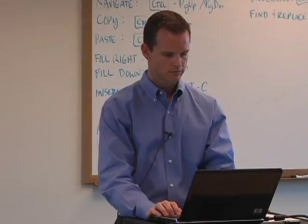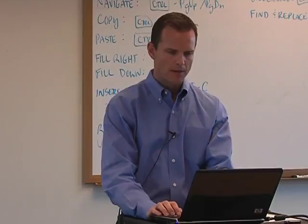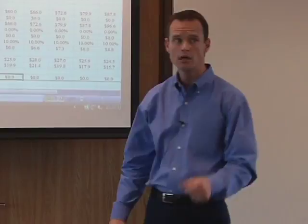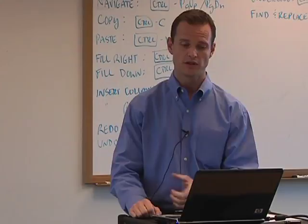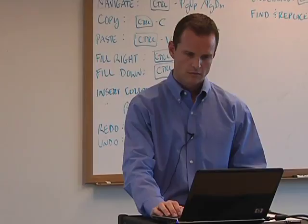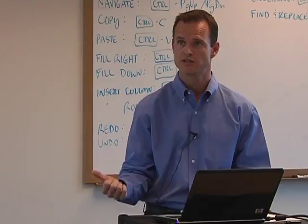The last item, interest earned on cash, is actually already correct — I checked the formula and there are no references to column G. It was set up correctly to begin with. At this point, we're done with our debt schedule. But we still have a couple of placeholders to fill in, so let's scroll back up to the balance sheet to the new debt line items.